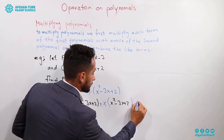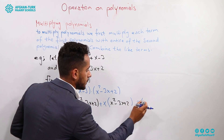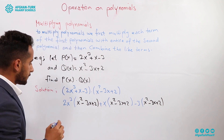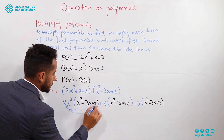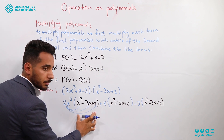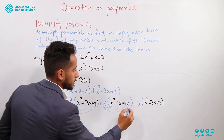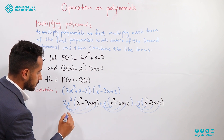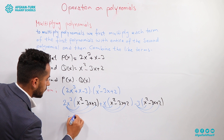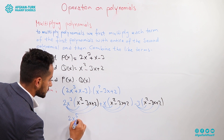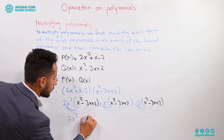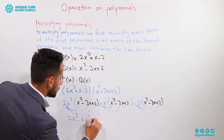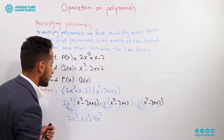Plus x times the second polynomial x² minus 3x plus 2, minus 3 times x² minus 3x plus 2. Then we multiply 2x³ to each term of the second polynomial. So 2x³ times x² equals 2x⁵, 2x³ times negative 3x equals negative 6x⁴, and 2x³ times 2 equals 4x³.